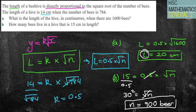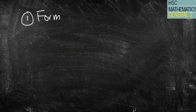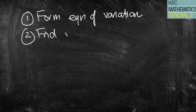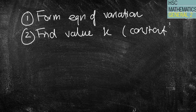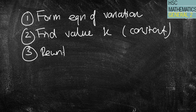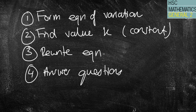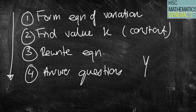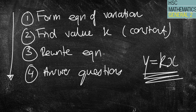So each time: first, form your equation of variation; second, find the value of k, the constant of variation; third, rewrite your equation with k; and fourth, answer your questions. The next lesson looks at inverse variation — the process is identical, except instead of y equals kx, the formula will be y equals k over x. Please work through some past paper questions because you'll certainly see a few of these in your exam, in the trials, and the HSC. Have an awesome day, and I hope this made sense.